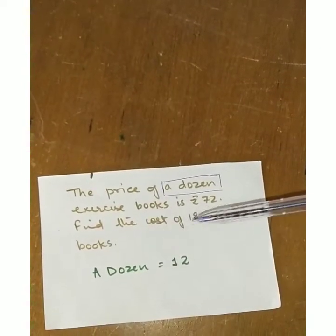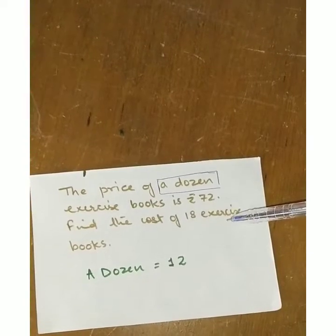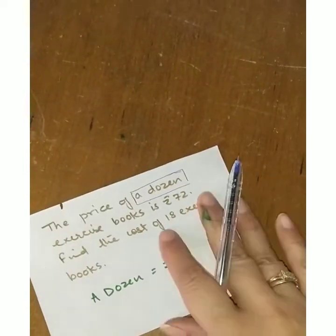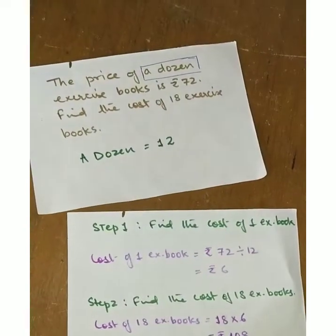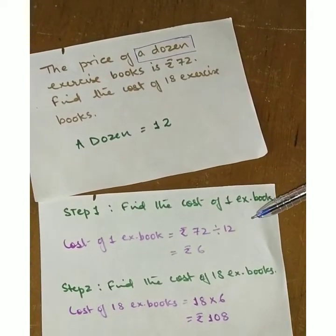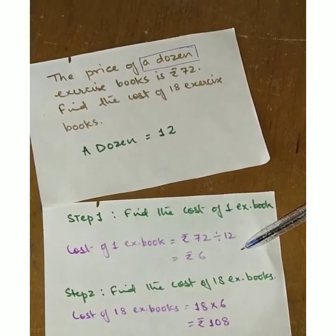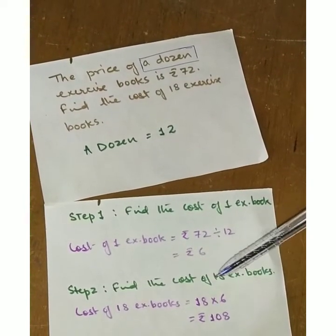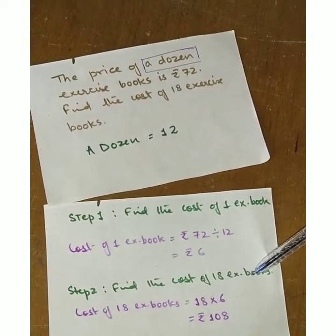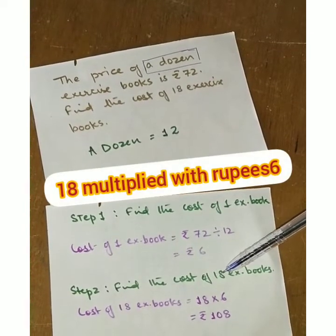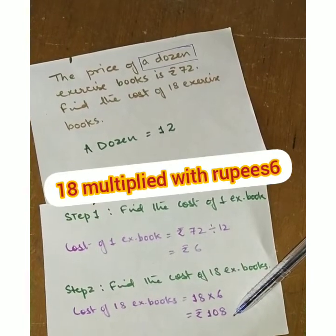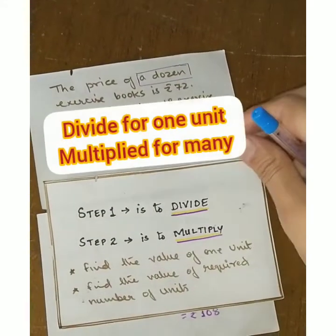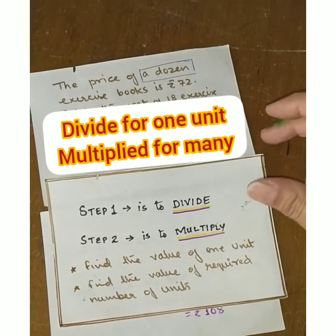We have to find the cost of 18 exercise books. For that, we first find the cost of one exercise book. Step one: 72 divided by 12 gives rupees 6. Step two: find the cost of 18 exercise books — 18 multiplied by 6 equals rupees 108. In step one we divided, and in step two we multiplied.